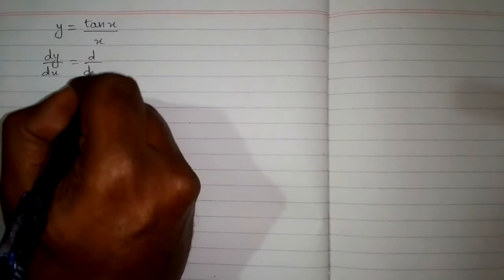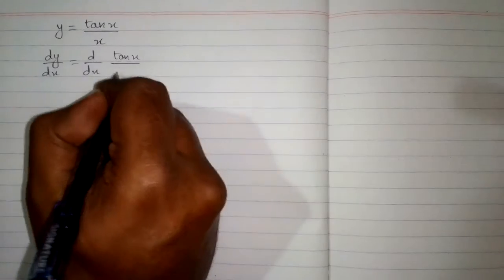In this video we will find the derivative of the function y equals tan x upon x. So first of all we will differentiate both sides with respect to x. So we have dy by dx is equal to d by dx of tan x upon x.